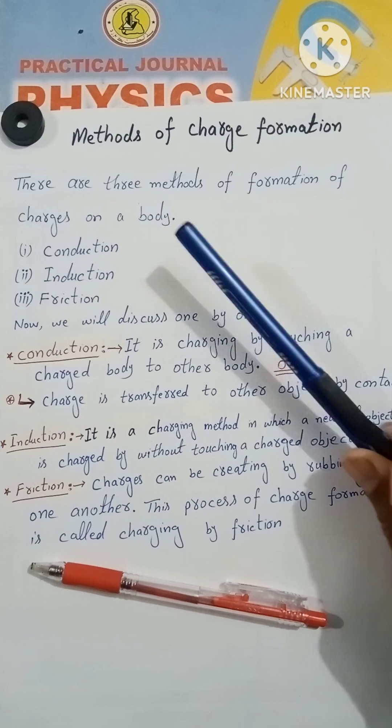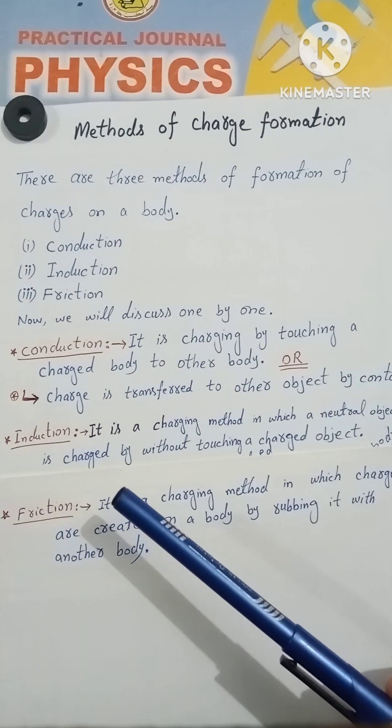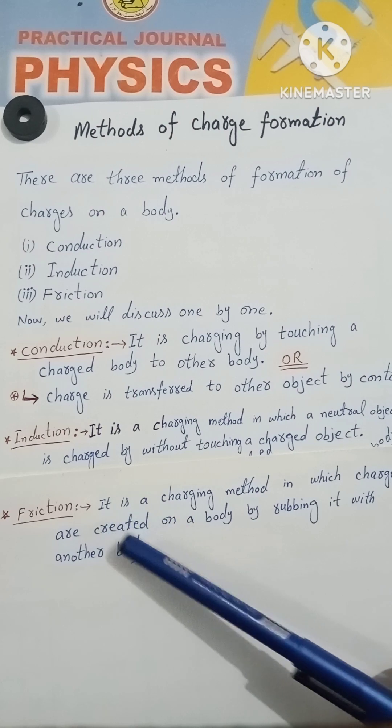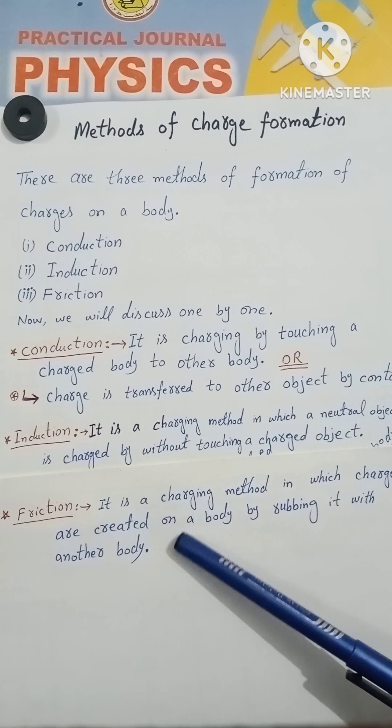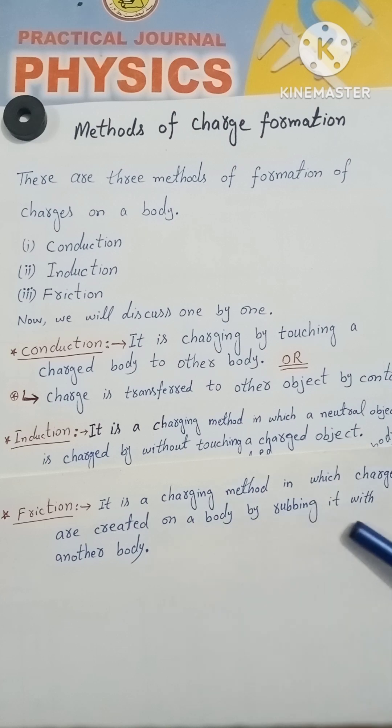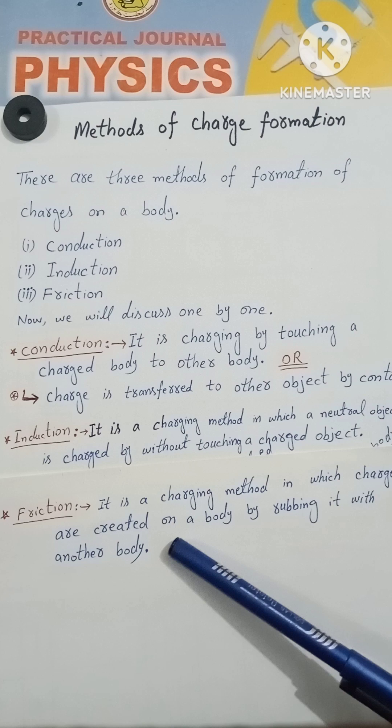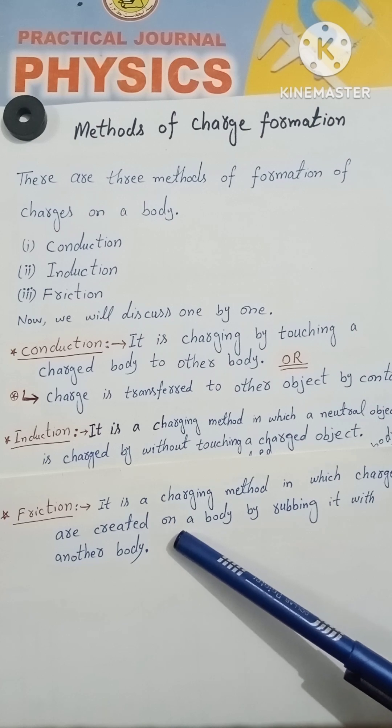Students, the third process of creating charges is friction. We can create charge on a body by rubbing it with another body. For example, we use a comb in our hairs. So by combing, when friction is produced between hairs and comb, when they come in contact,